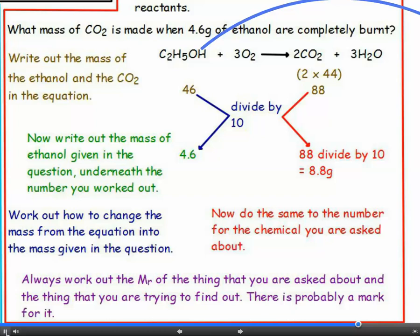Now, work out how to change the number from the equation, that's 46 here, into the number 4.6 in this case. If you're really stuck, divide the number by itself, and then multiply by the number you want to turn it into. In this case, divide by 46 and multiply by 4.6.